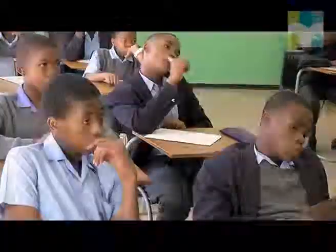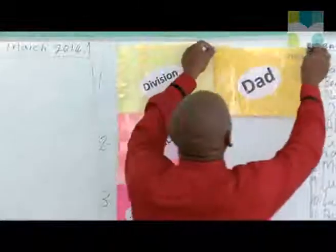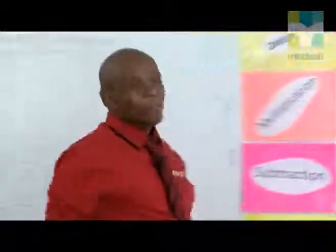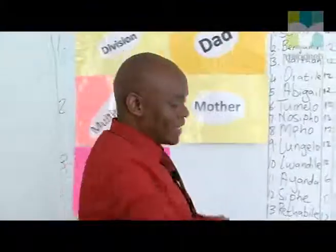Since most of our learners are struggling, I normally use another method which I learned somewhere, where I bring the family into the situation. We replace division with 'debt', which is quite easy for most of our learners. And we replace multiplication with 'mother'. So you've got debt and then you've got mother, and it's easier for our learners to know that you start with debt then you follow it with mother.